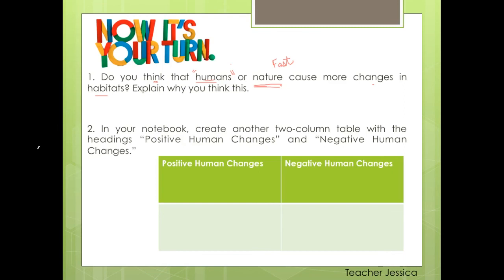The second activity is: in your notebook, create a two-column table just like this one, and list positive changes that humans cause and negative changes. For example, negative can be pollution and positive can be cleaning the ocean.